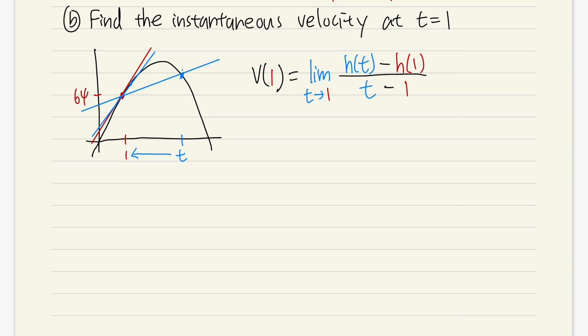This is why we need the limit. If you plug t = 1 directly into the expression, you get h(1) - h(1) = 0 on top and 1 - 1 = 0 on the bottom — zero over zero. You will always get zero over zero, which is why, as I mentioned, zero over zero is the most common indeterminate form in calculus, at least in Calculus 1.